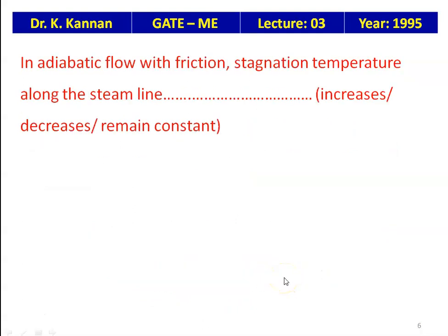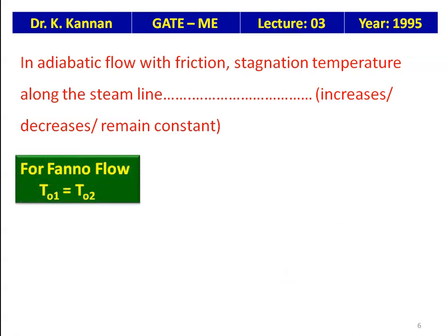In adiabatic flow with friction, the stagnation temperature along the streamline increases, decreases, or remains constant? Adiabatic flow with friction is called Fanno flow in gas dynamics. For Fanno flow, T₀₁ = T₀₂, so the stagnation temperature along the streamline remains constant.